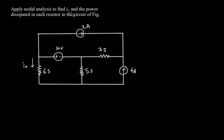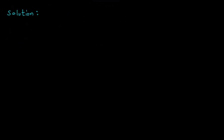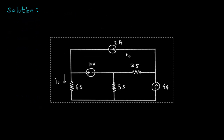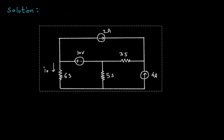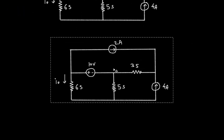Apply nodal analysis to find IO and the power dissipated in each resistor in the circuit. First, we will redraw the circuit. The units are given in Siemens, so we will convert them into equivalent Ohms.